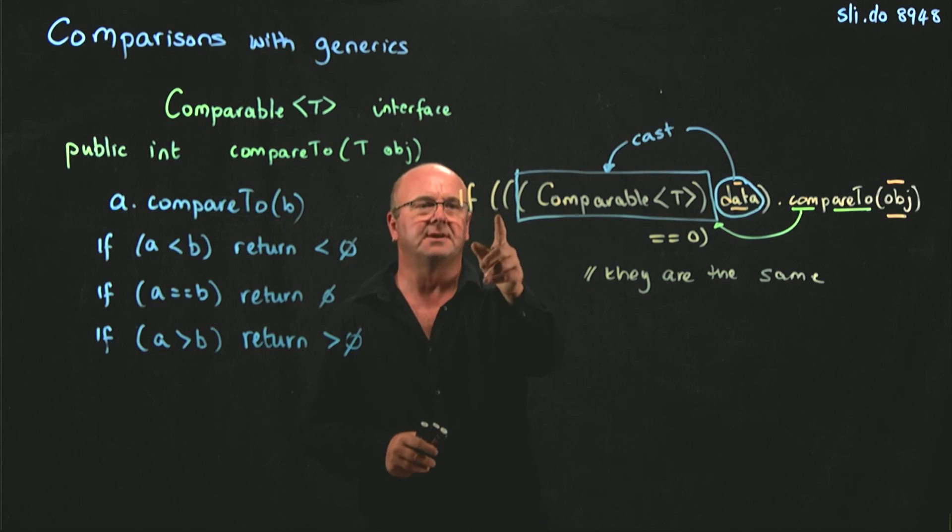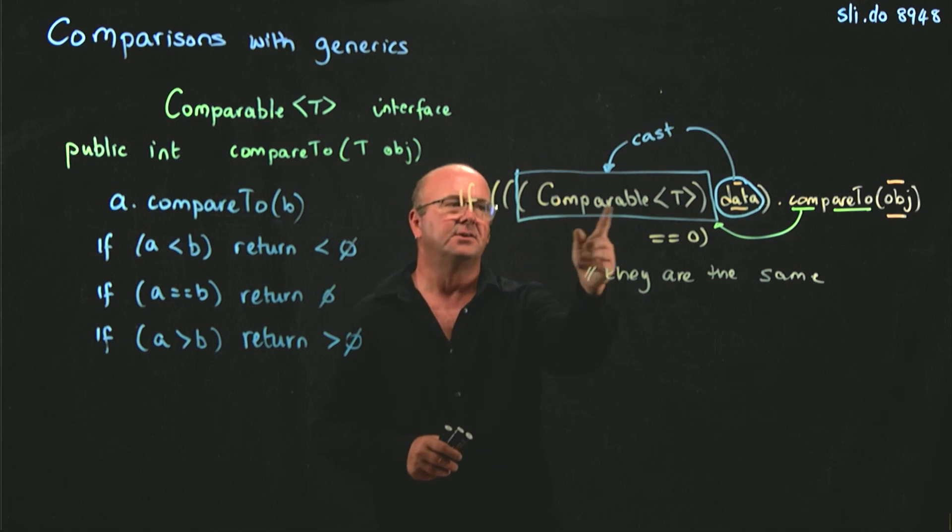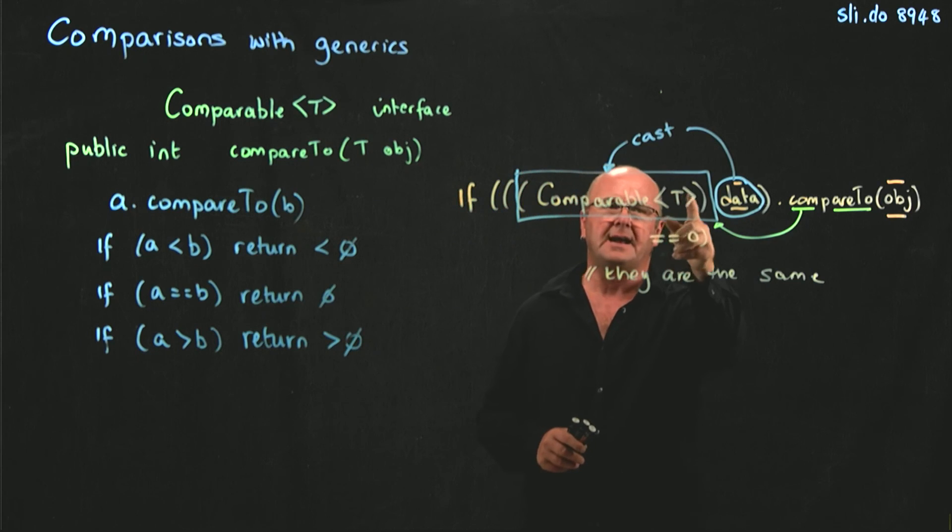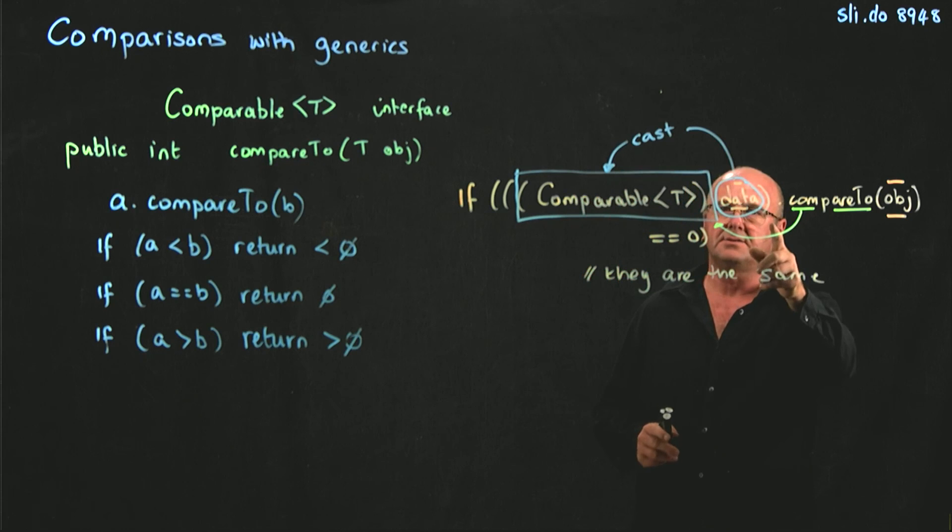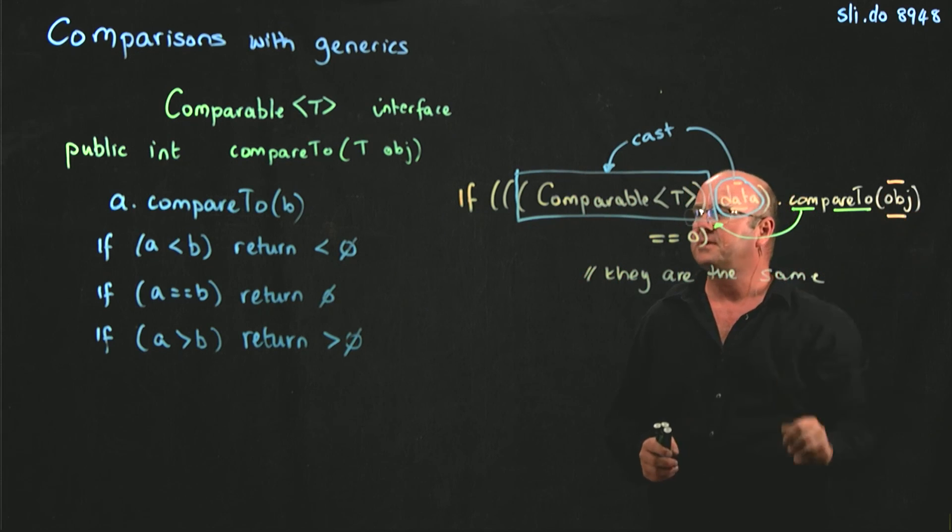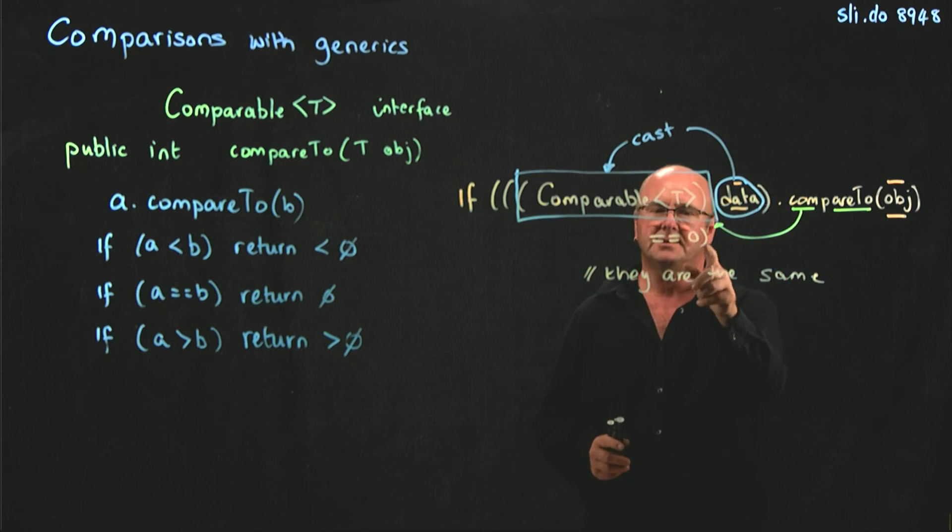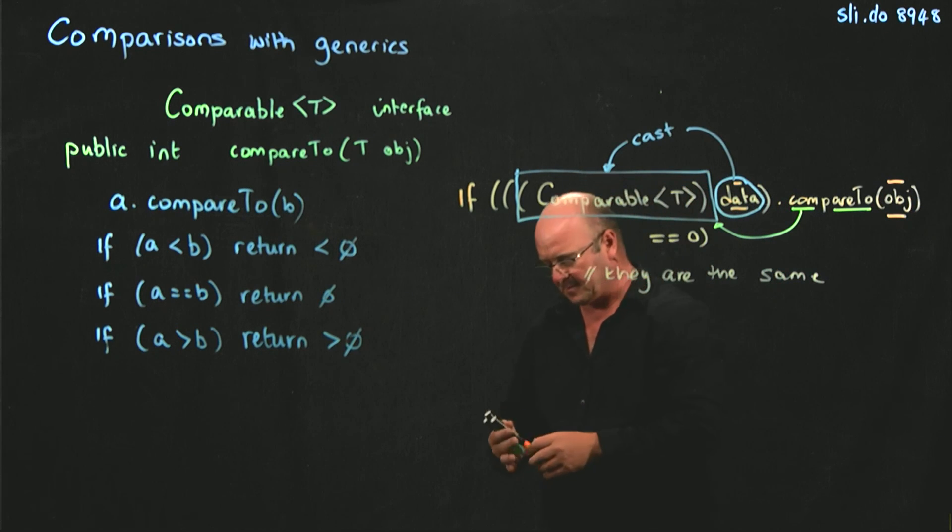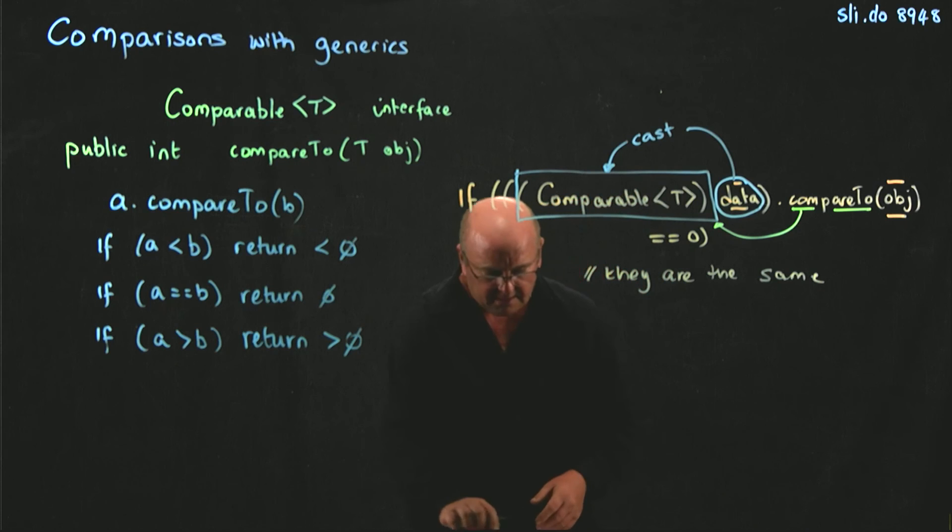So, it's if we have three open brackets, comparable, and then in angle we have our T or our E, one close bracket, data, close bracket, dot compareTo, and then the object that we compare to is equal to zero, they're the same.